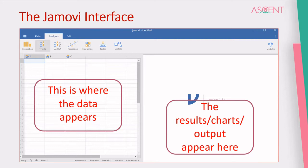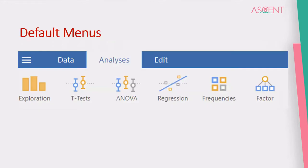The right side of the interface has the area for results, charts, and output, from which you can see and copy the outputs. This is somewhat different from other softwares where these are presented as two different windows. The default menu layout of Jamovi has three main menus: Data, Analysis, and Edit.